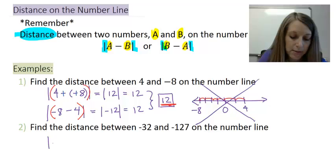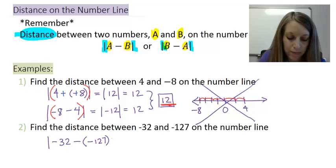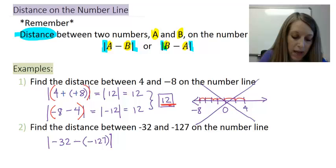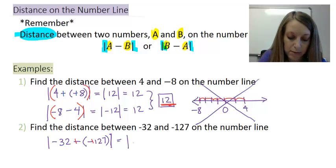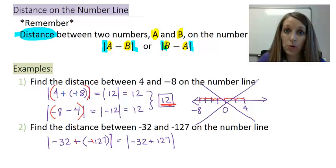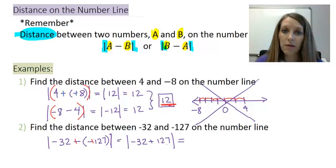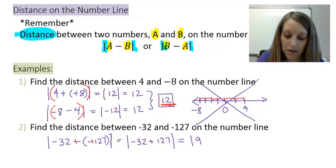So I'm going to go with the absolute value of -32 minus -127. My double negatives cancel out, giving me the absolute value of -32 plus 127. So I just need to add these two numbers. I'm going to mentally think about it as 127 minus 32, which gives me 95.